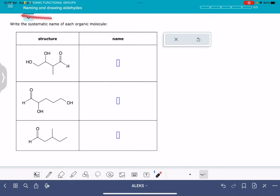In this video, I'll show you how to solve the ALEKS problem called naming and drawing aldehydes. There are two versions of this problem. One version gives you three molecules and asks you to come up with their name. Another version, which is much easier, gives you the molecule's name and asks you to draw its structure.